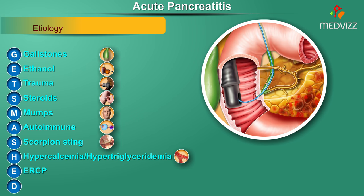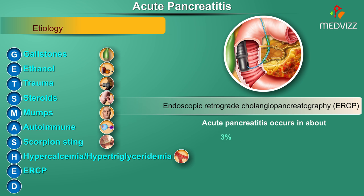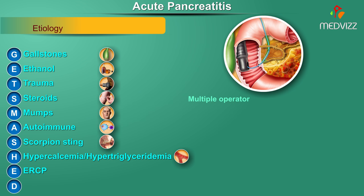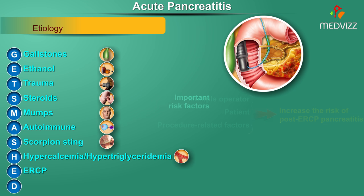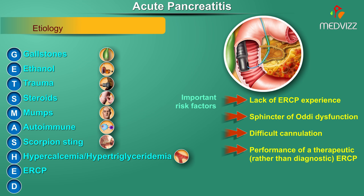E stands for ERCP. In patients who have undergone endoscopic retrograde cholangiopancreatography (ERCP), acute pancreatitis occurs in about 3 percent undergoing diagnostic ERCP, 5 percent undergoing therapeutic ERCP, and about 25 percent undergoing sphincter of Oddi manometric studies. Multiple operator, patient, and procedure-related factors increase risk. Important risk factors include lack of ERCP experience, sphincter of Oddi dysfunction, difficult cannulation, and performance of therapeutic rather than diagnostic ERCP.